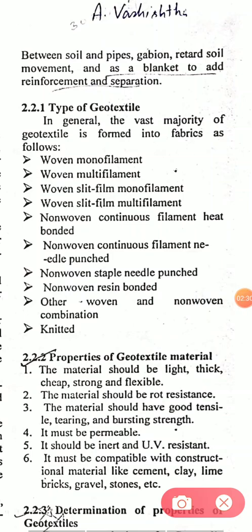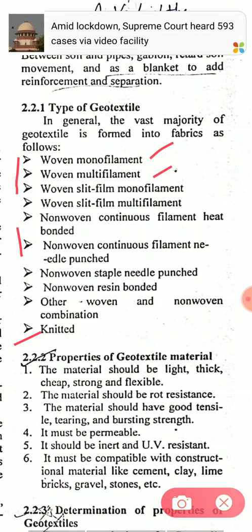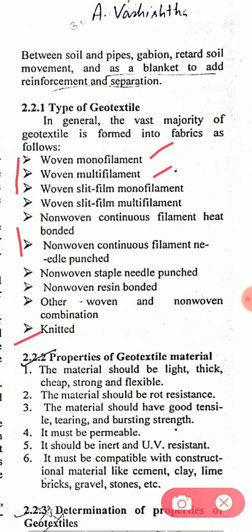Types of geotextiles: the vast majority of geotextiles are formed into fabrics as woven, non-woven, and knitted. Woven fabrics are mostly preferred, made of monofilament, multifilament, or slit film. Non-woven types include continuous filament heat bonded, continuous filament needle punched, staple needle punched, and resin bonded. Non-woven is also used but less than woven, and knitted is very rarely used.